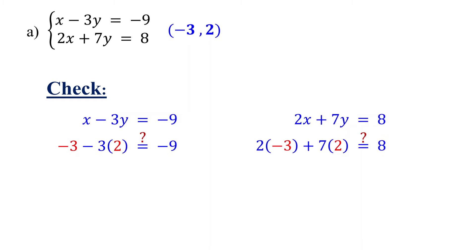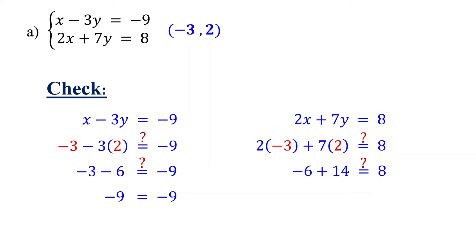We can check that the ordered pair is a solution to the system by substituting it into both original equations. Substitute negative 3 for x and 2 for y. In the first equation, 3 times 2 is 6; negative 3 minus 6 is negative 9. In the second equation, 2 times negative 3 is negative 6, and 7 times 2 is 14. Negative 6 plus 14 is 8. Both equations are satisfied, confirming that negative 3 comma 2 is indeed the solution.